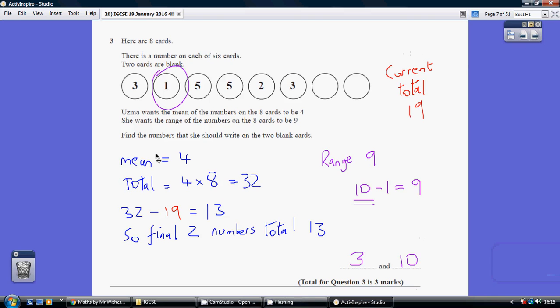Question 3. Now I don't think this was particularly easy for question 3. So first things first, we're told that the mean is going to be 4. So how do you work out the mean? You add up all the numbers and divide by the number of numbers. So we know we've got 8 numbers here in total.